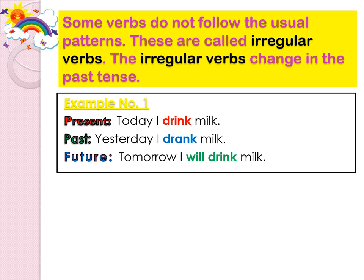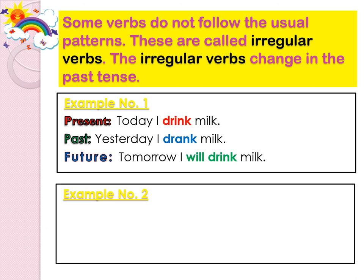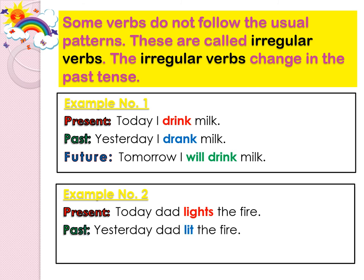Example number two. Present tense: Today dad lights the fire. Past tense: Yesterday dad lit the fire. Future tense: Tomorrow dad will light the fire.